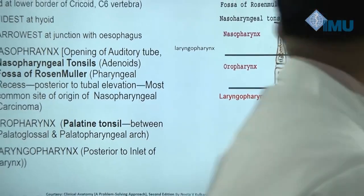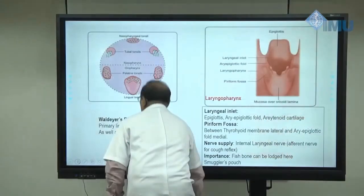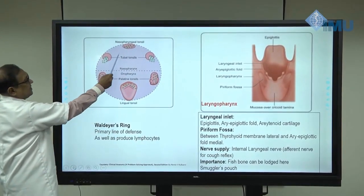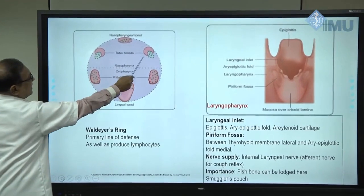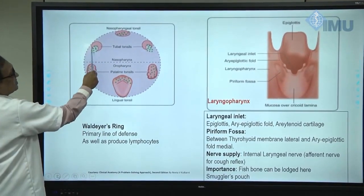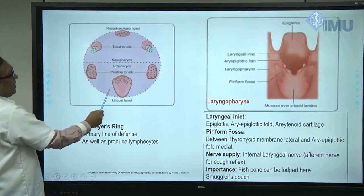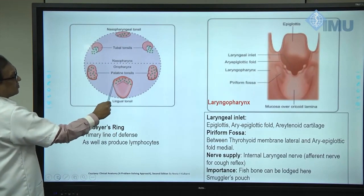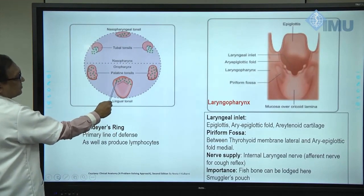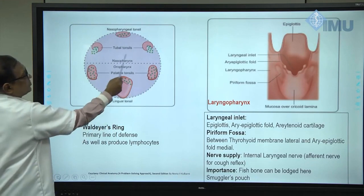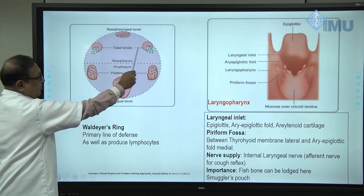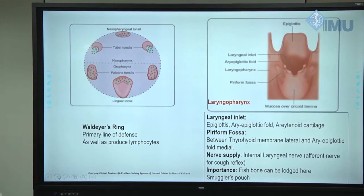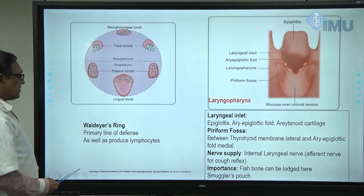Next we go to Waldeyer's ring. The nasopharyngeal tonsil, the palatine tonsil on each side, the tubal tonsil around the opening of the auditory tube, and the lingual tonsil on the posterior aspect of the tongue — together they form Waldeyer's ring. This ring is a primary line of defense, giving defense not only to the respiratory tract but also to the GI tract.